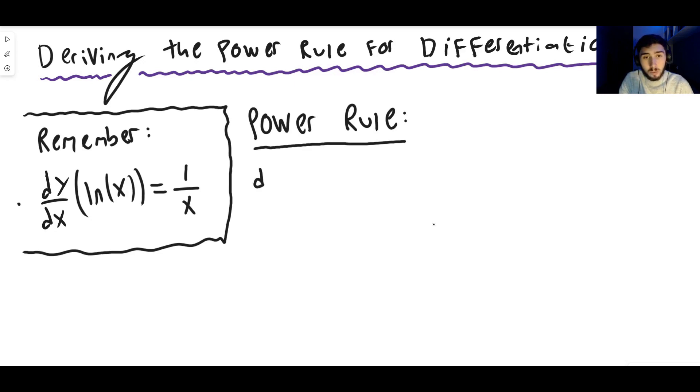In general the power rule, the derivative of a function x to the power of n where n can be any number, any number, positive, negative, zero, fraction, whole number, any number n can be. But it has to be a number, it can't be another function.